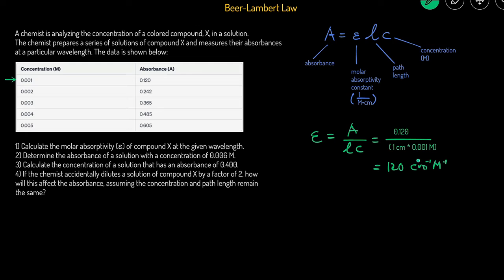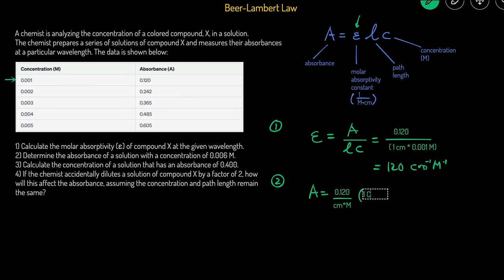This means the units are 1/cm and 1/M since centimeters and molarity didn't cancel out. For question two, we determine the absorbance of a solution with concentration 0.006 M. We have E = 120 cm⁻¹M⁻¹ and L = 1 cm. Using A = ELC: A = 120 × 1 × 0.006 = 0.720. Absorbance has no units, so the answer is 0.720.